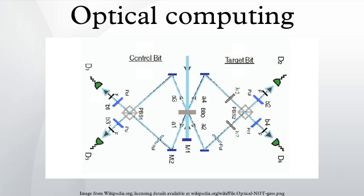Optical components for binary digital computers: the fundamental building block of modern electronic computers is the transistor. To replace electronic components with optical ones, an equivalent optical transistor is required. This is achieved using materials with a non-linear refractive index. In particular, materials exist where the intensity of incoming light affects the intensity of the light transmitted through the material in a similar manner to the voltage response of an electronic transistor.